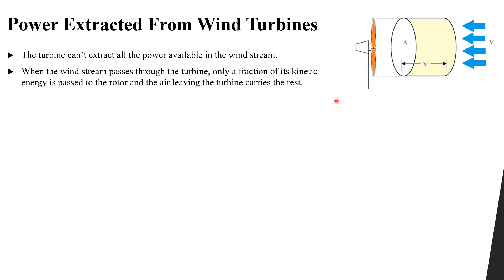Only a fraction of the kinetic energy of the wind stream is passed to the rotor, and the rest leaves the turbine carrying the remaining energy. The power of the turbine is equal to one-half rho — the density of air — multiplied by the area of the turbine, multiplied by v cubed — the velocity of the wind stream — multiplied by a power coefficient Cp.